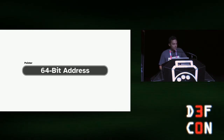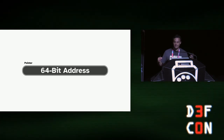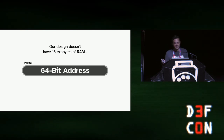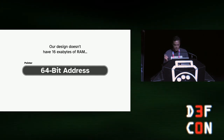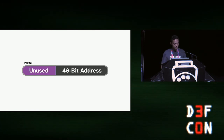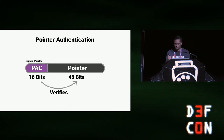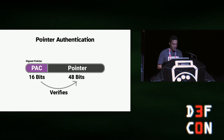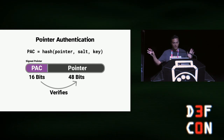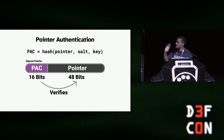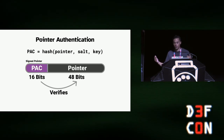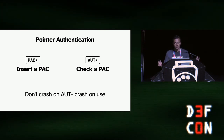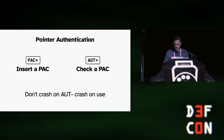Let's design a processor together. Our processor has 64-bit addresses, but we don't have 16 exabytes of RAM, so these pointers have a bunch of bits we're not using. Let's set aside 16 bits in every address as a signature that verifies the rest of the pointer has not been tampered with. We compute the PAC by taking a hash of the pointer itself, a per-object salt, and a secret key. For today's talk, we assume this hash is as strong as possible and cannot be forged — we have to brute force it. There are two instructions: PAC instructions insert a PAC, and AUT instructions verify it. Importantly, we do not crash on the AUT — we crash on the use.